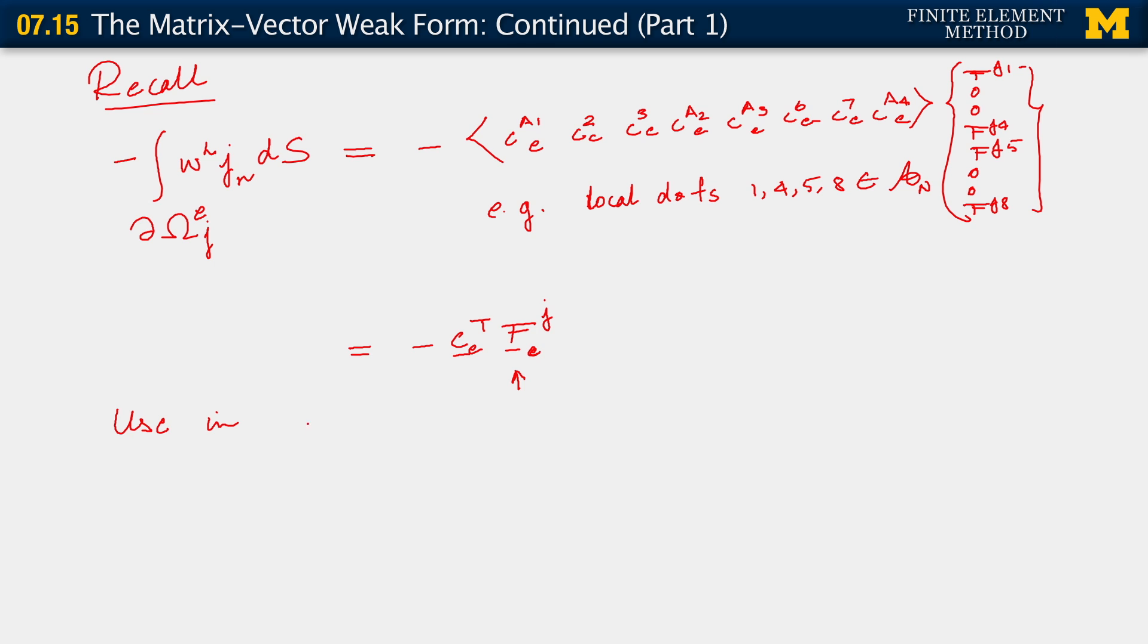So what we want to do is use in the following. We now have a way to write the left-hand side as a sum over e of terms of the form C_e transpose K_e d_e. We derived this a few seconds ago, equal to sum over e C_e transpose F_internal_e. And now, this new term that we've developed here, this is again a sum over elements.